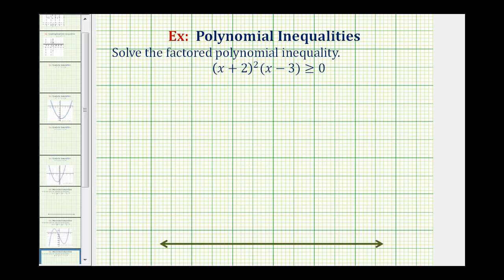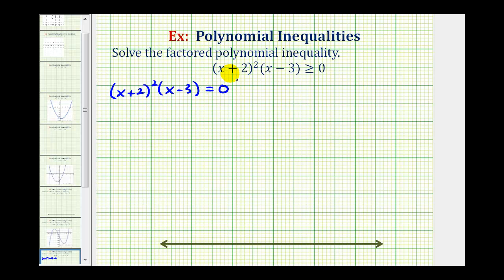So even though we have an inequality here, the first step is to set the left side equal to zero and solve for x. We want to solve the quantity (x + 2)² times the quantity (x − 3) equals zero.